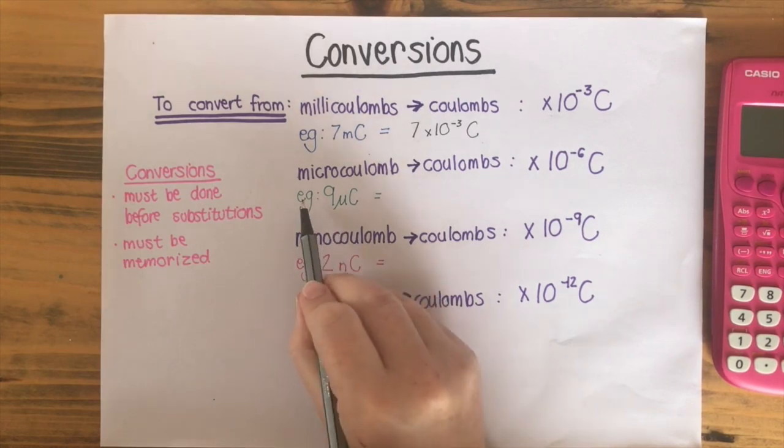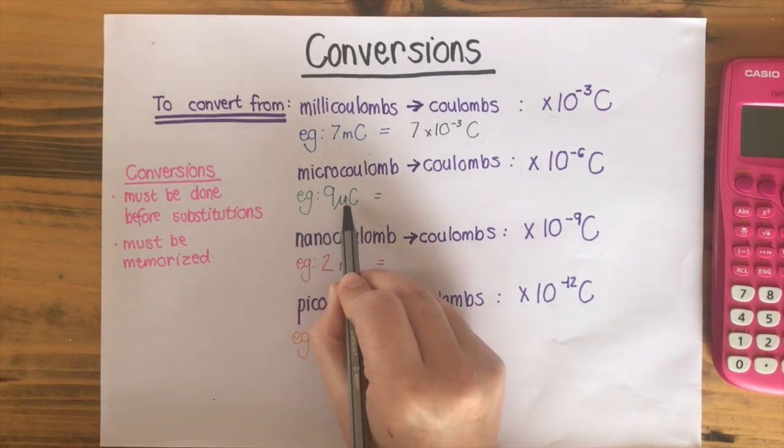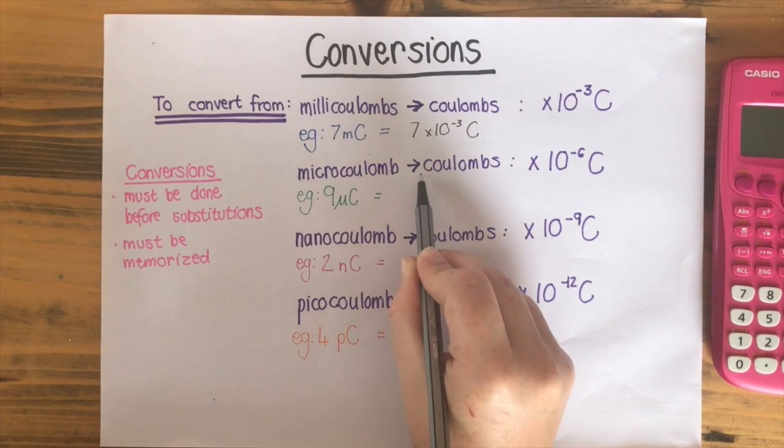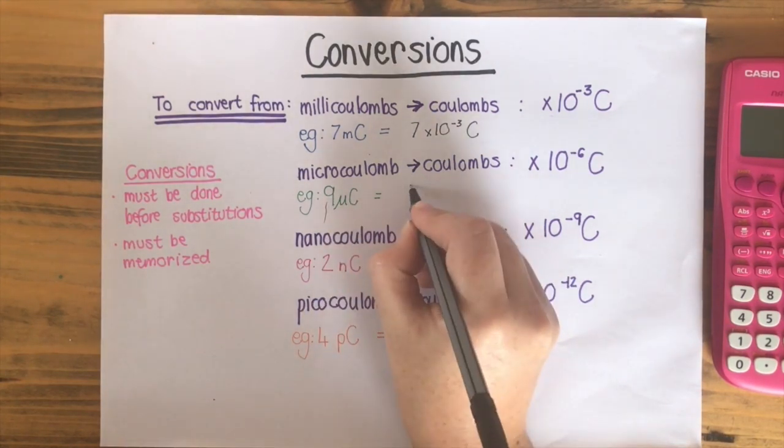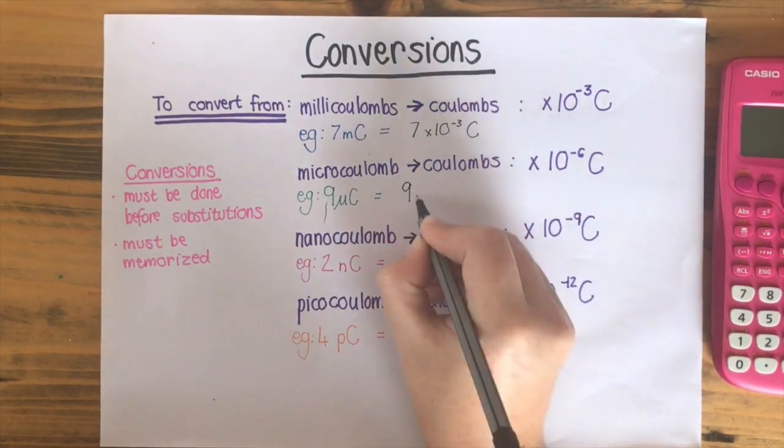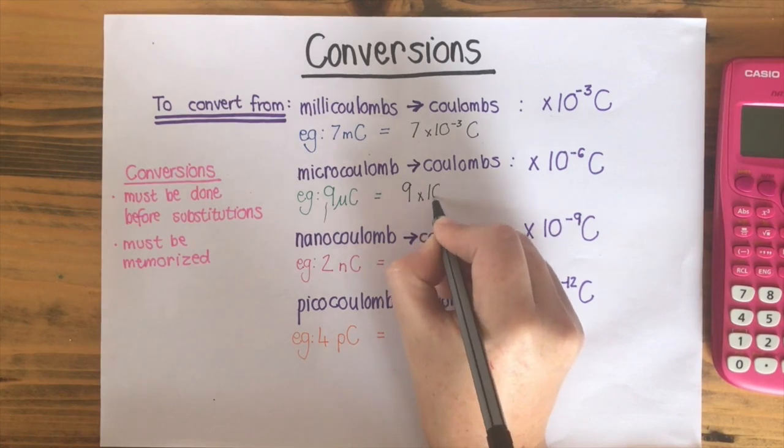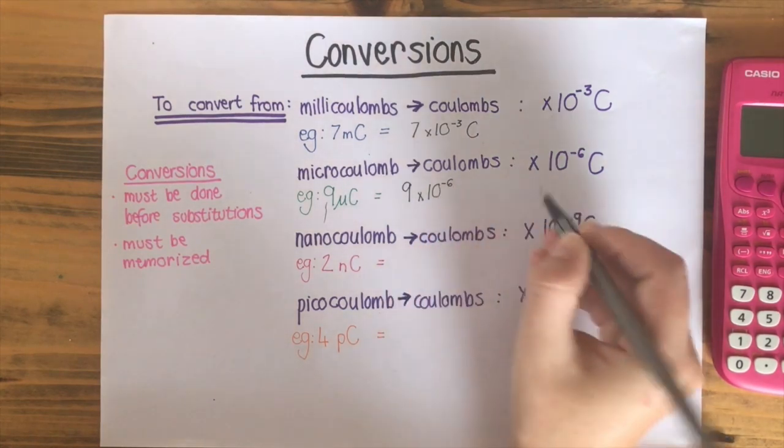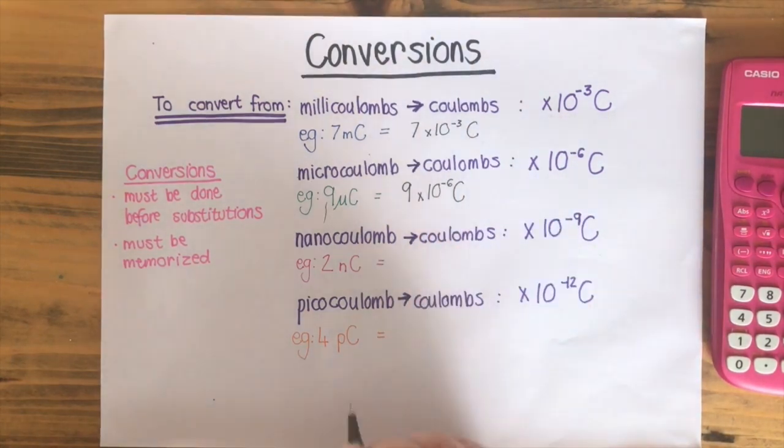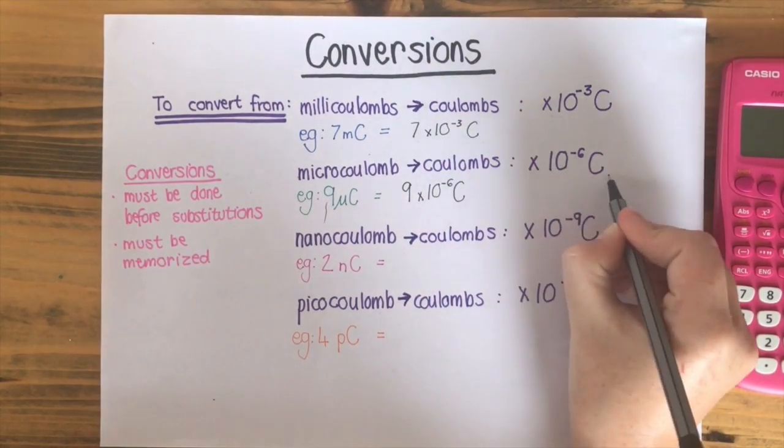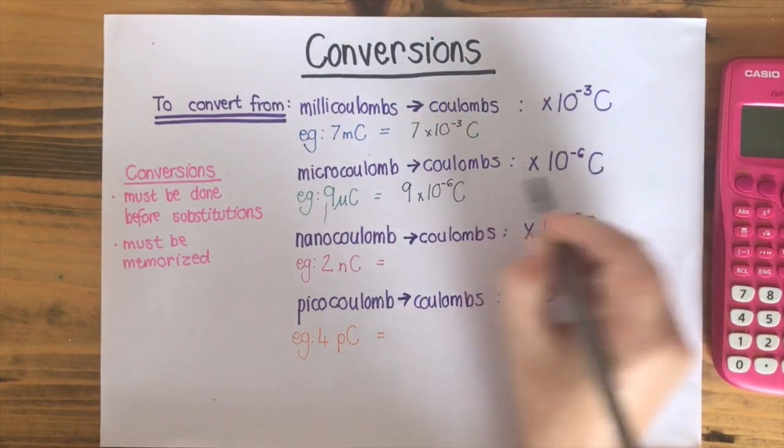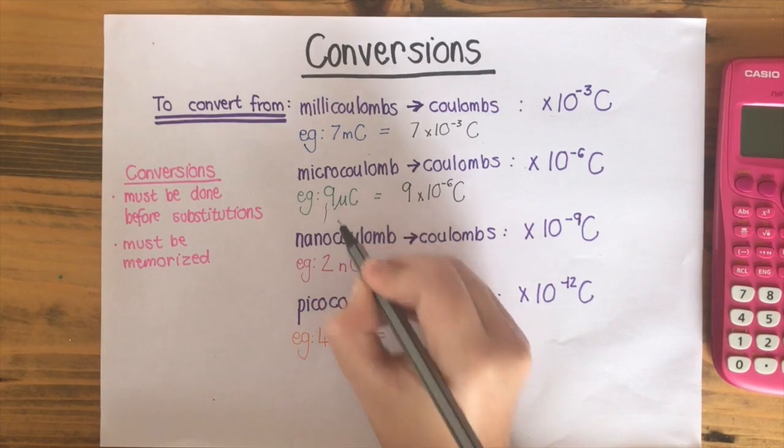If we wanted to convert 9 microcoulombs into coulombs, we would go 9 times 10 to the power of minus 6 coulombs. So we are just substituting in that bit over there for where the micro would normally be.